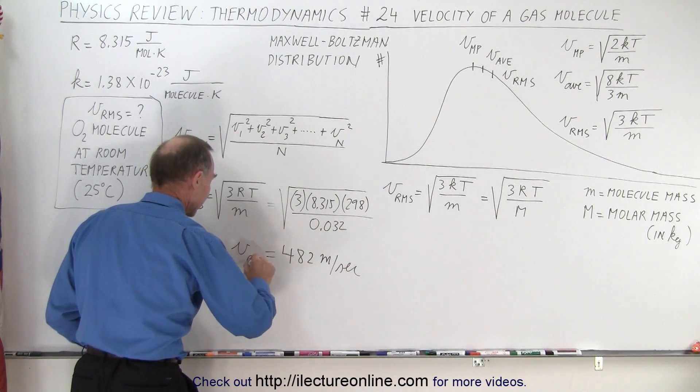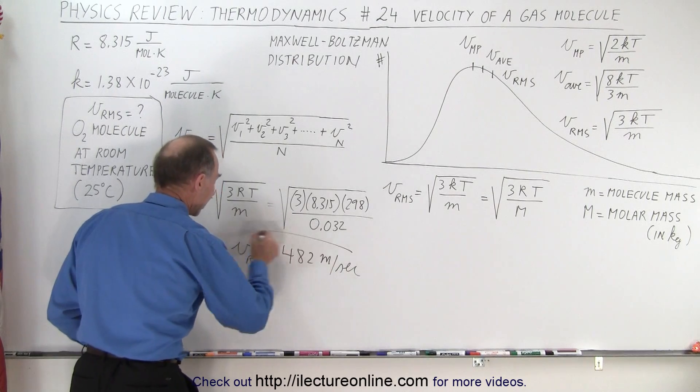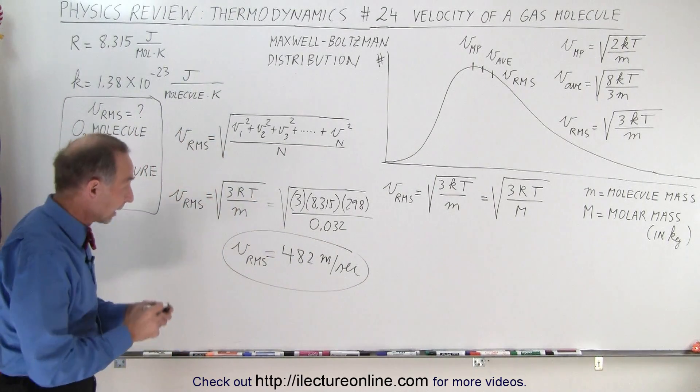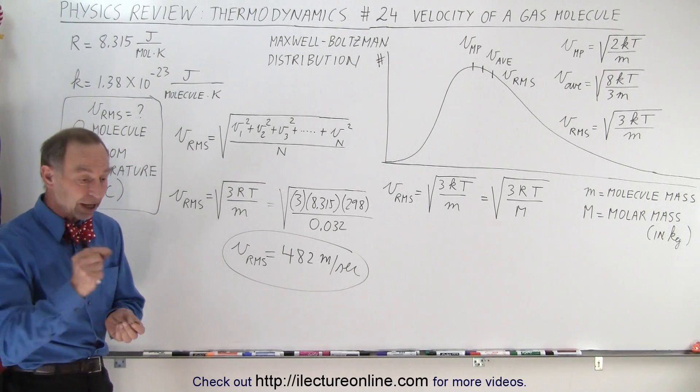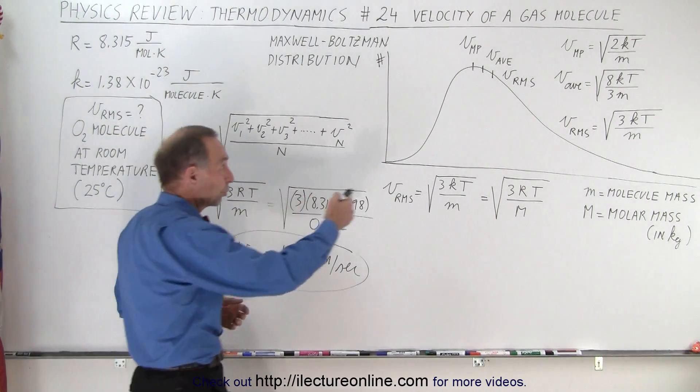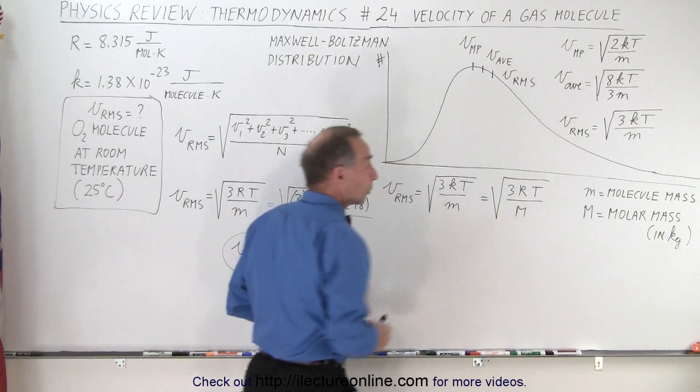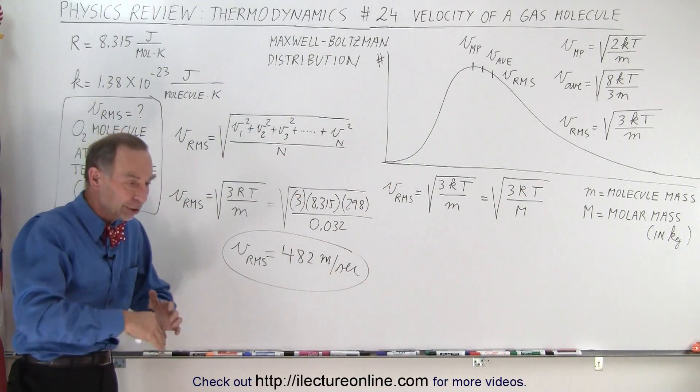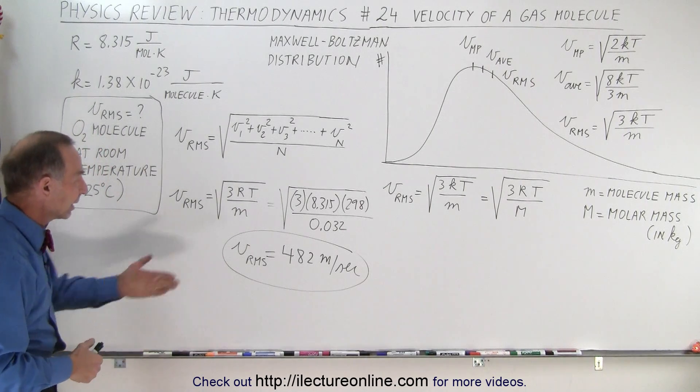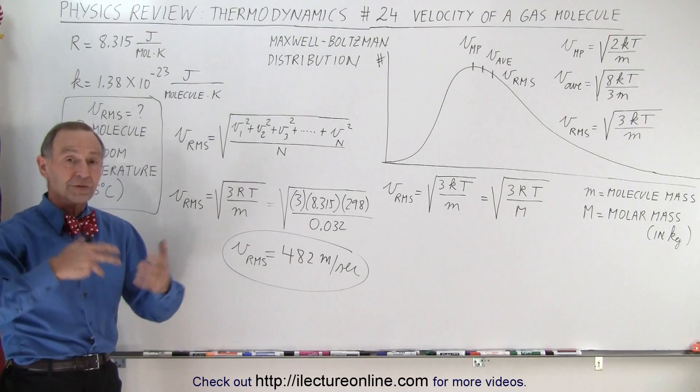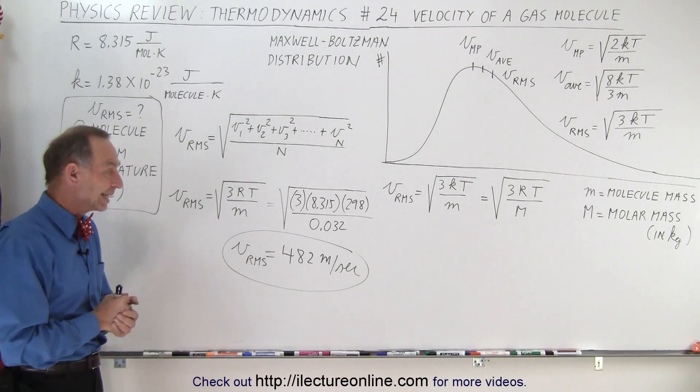So that's the RMS velocity of an oxygen molecule. That is how you calculate the RMS velocity, the effective velocity of an oxygen molecule, which means that some will travel faster, some will travel slower, but the effective velocity - you could look at a gas of oxygen molecules at that particular temperature, and that would be the effective velocity of any one of the molecules in the gas.